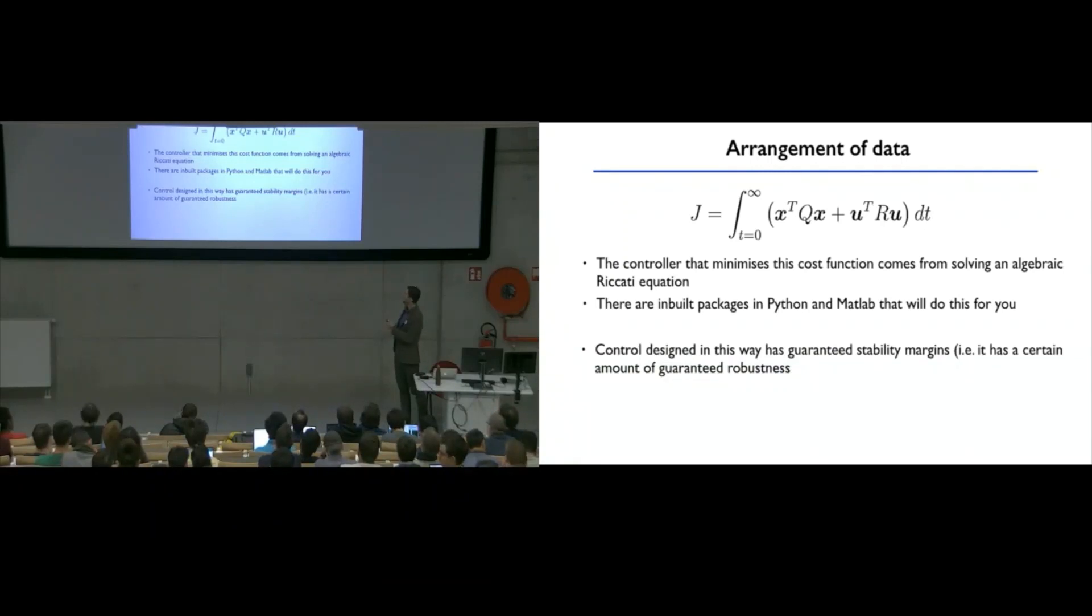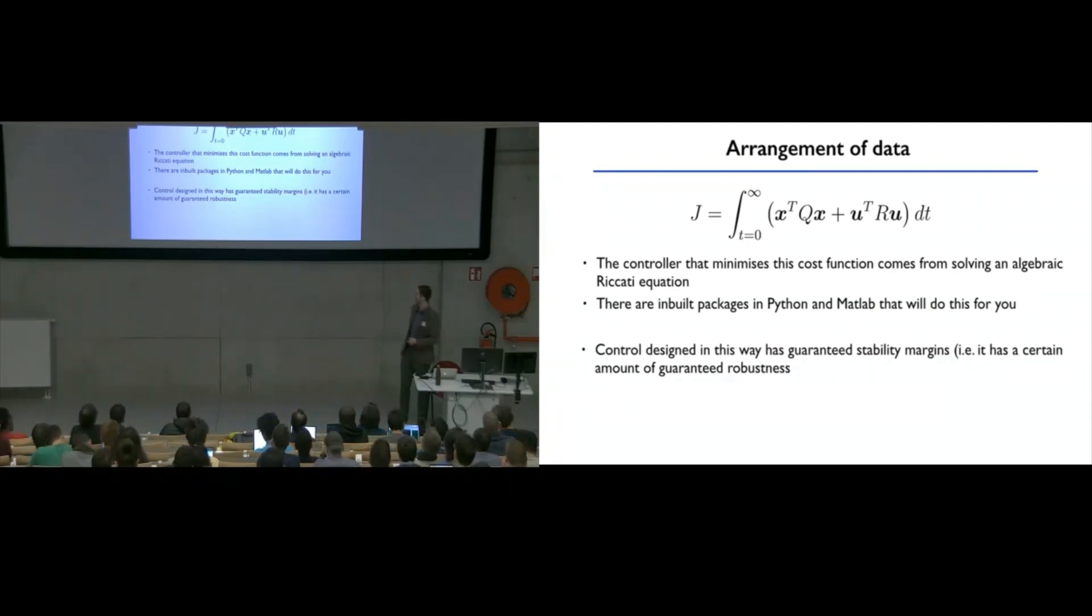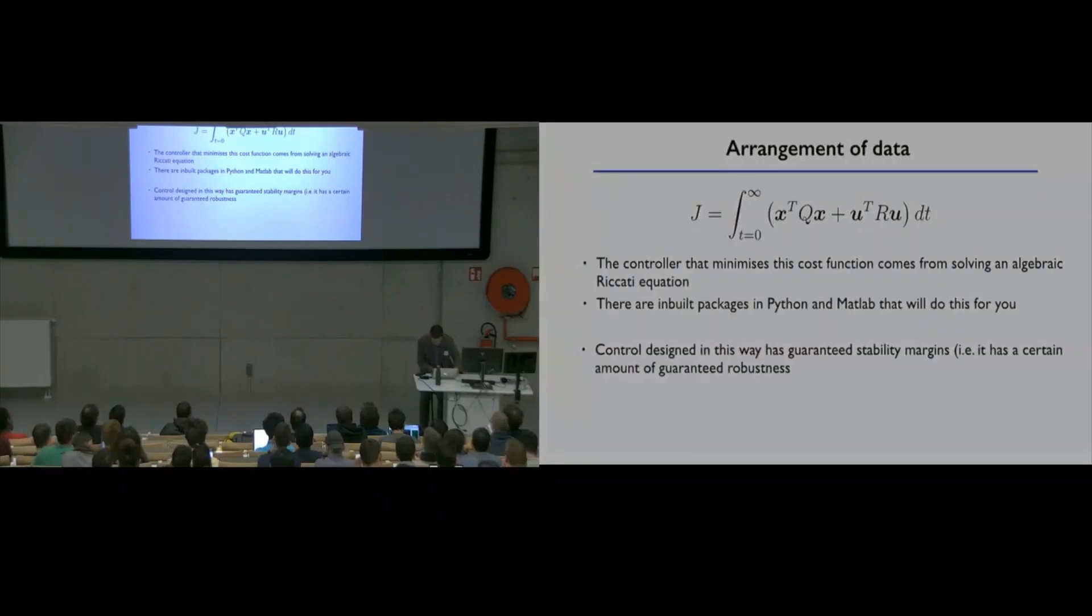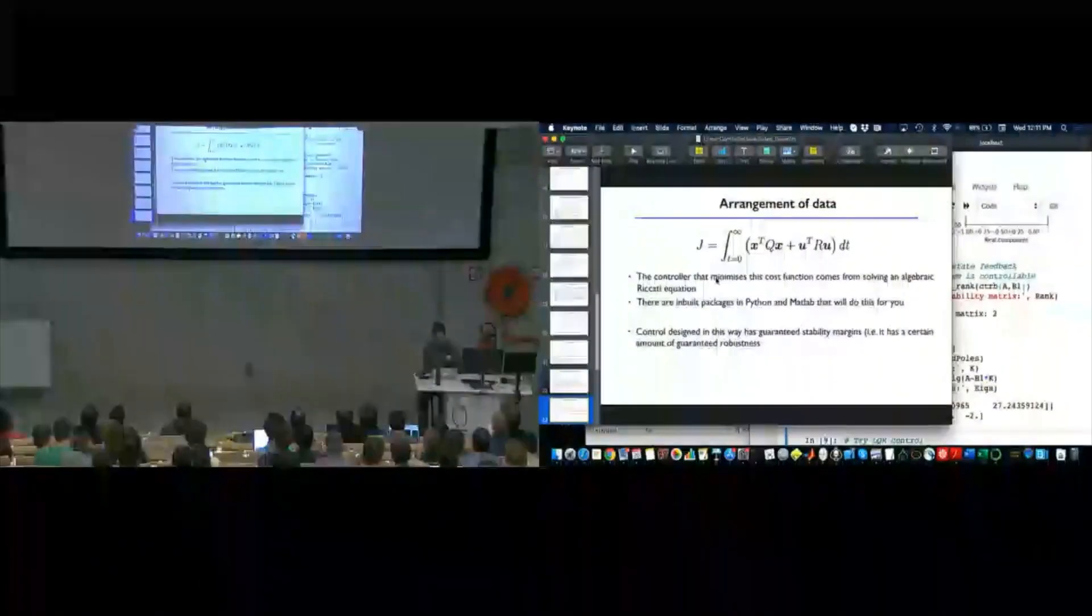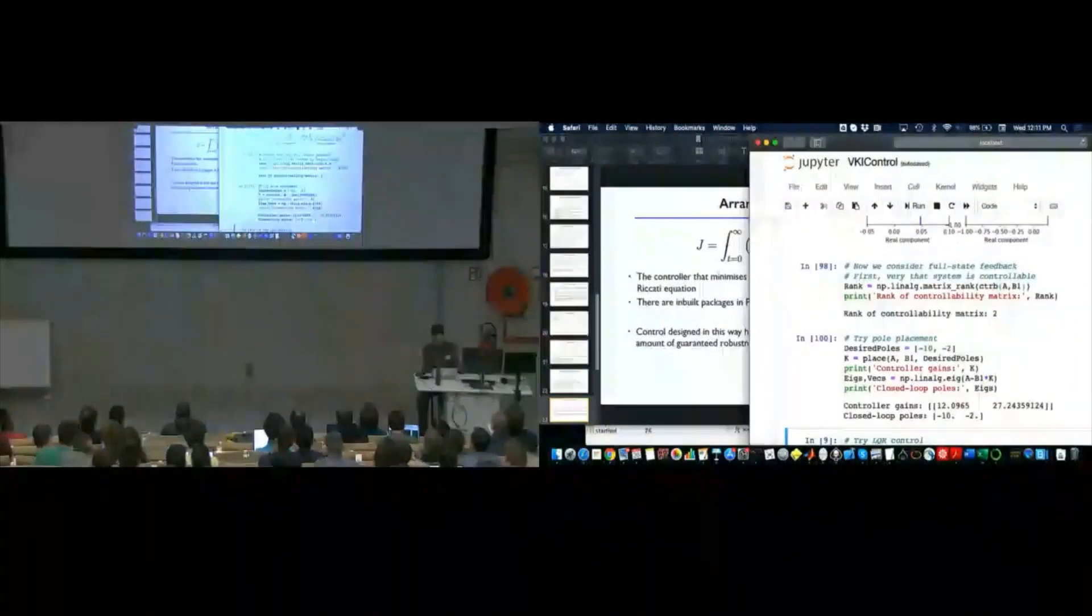And the nice thing about this form of control is that as well as being optimal, we also have, in some sense, a guarantee of robustness, which comes in the form of guaranteed stability margins, which I'm not going to go into too much in this lecture, but it's a nice added bonus for LQR control with full state feedback. So, once again, let's implement this in practice.